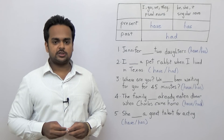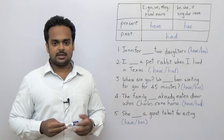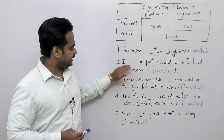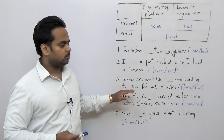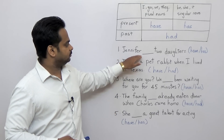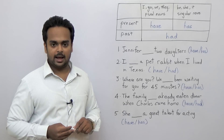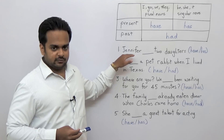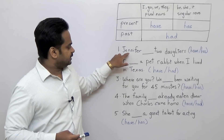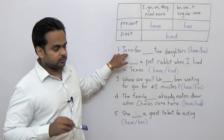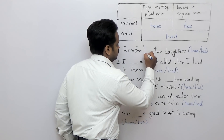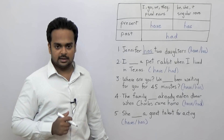Now I'm going to give you a small test to see if you can use have, has, and had correctly. Here are five sentences — fill the blank with the correct form. Number one: 'Jennifer ___ two daughters.' Is it 'have' or 'has'? The subject is Jennifer — she is a singular noun and this is in the present tense. So we use 'has': Jennifer has two daughters.